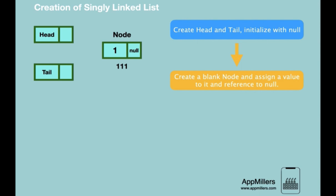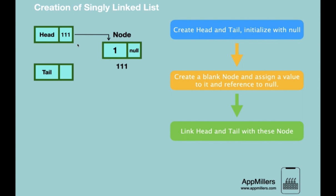As we create this node, it is stored in memory. Imagine its physical location is 111, and the reference of this node is null, indicating there is no other node. The next step is to link this node with head and tail. We point the head reference to this node by updating head's reference to this node's physical location, creating a link between head and the first node. Since we have only one node, it is both first and last, so tail also references this node — its physical location 111 is stored in tail.